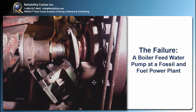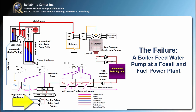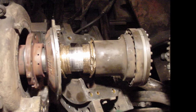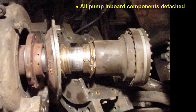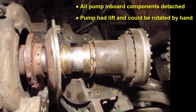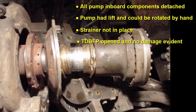The failure occurred on a boiler feed water pump at a fossil fuel power plant in the northeast section of the United States. The pump in question is this outboard boiler feed pump. The plant was operating normally and this pump shut down during operation, of course tripping the plant. Looking into the pump, we found that all the pump inboard components had become detached. The pump had lift and could be rotated by hand. The strainer was not in place, and when the turbine-driven boiler feed pump was opened up, there was no damage to the impeller and no damage to the housing.